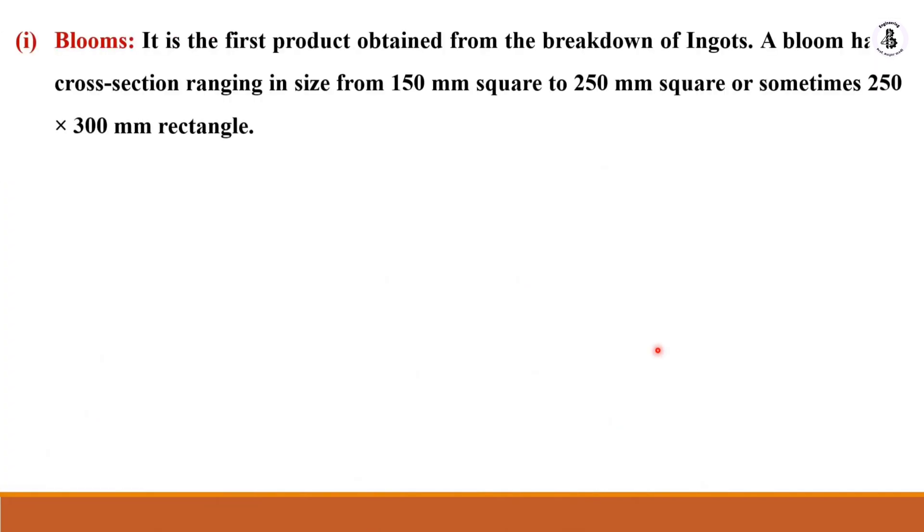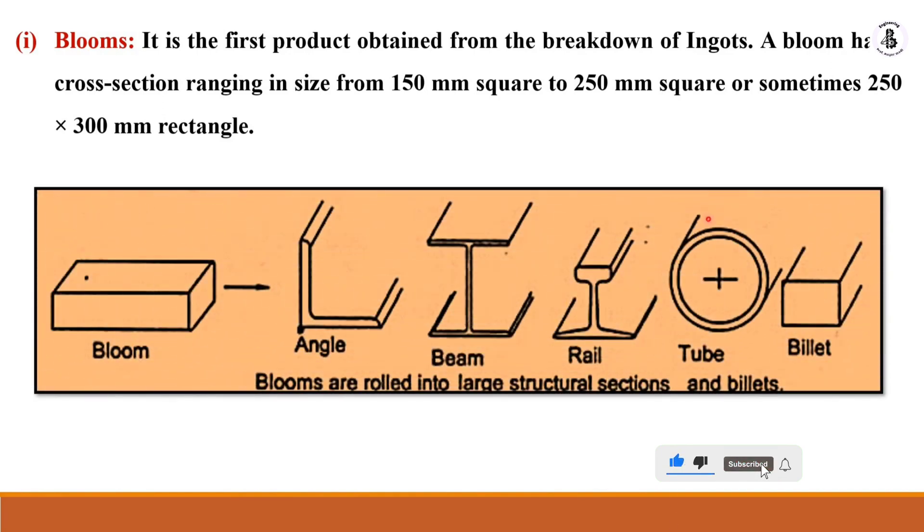In case of blooms, they are basically the first product obtained from the breakdown of ingots. The blooms have a cross-sectional area from 150 mm square to 250 mm square.